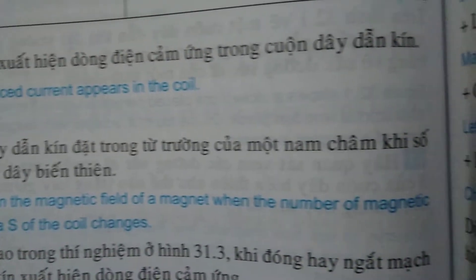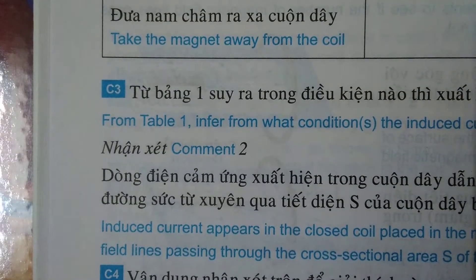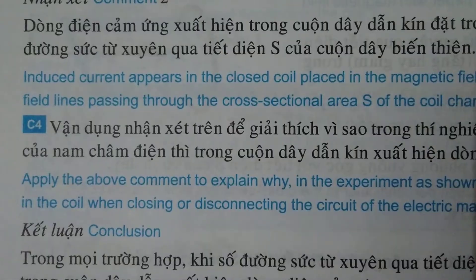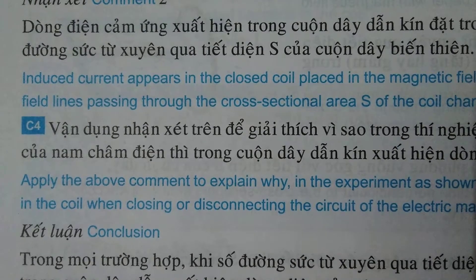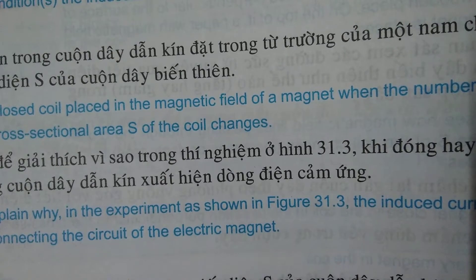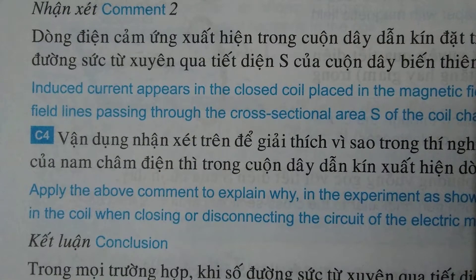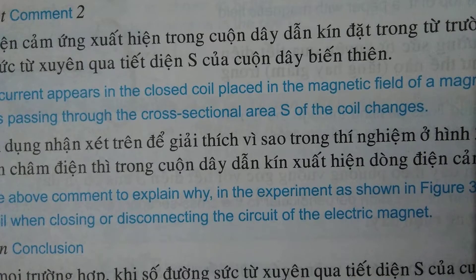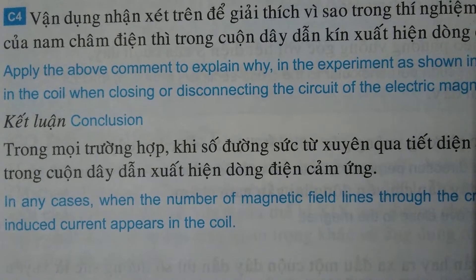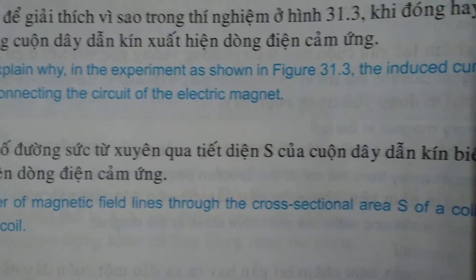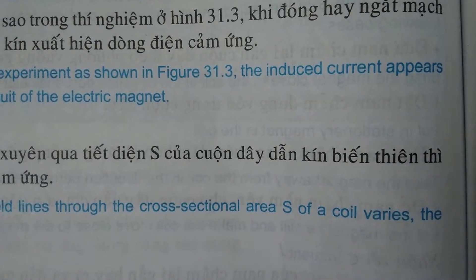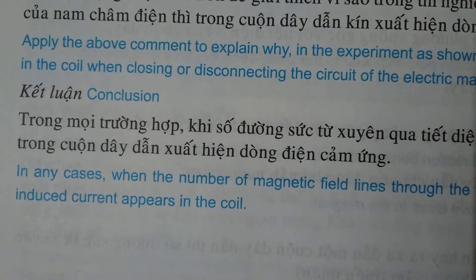When the number of magnetic field lines passing through the cross-sectional area S of the coil changes, an induced current appears. Apply this to explain why in the experiment shown in figure 31.3, the induced current appears in the coil when closing or disconnecting the circuit of the electromagnet. Conclusion: In any case, when the number of magnetic field lines through the cross-sectional area S of a coil varies, the induced current appears in the coil.